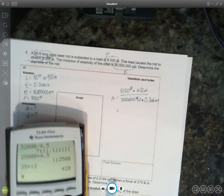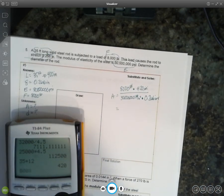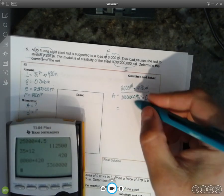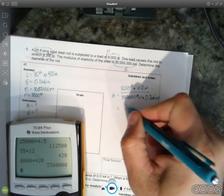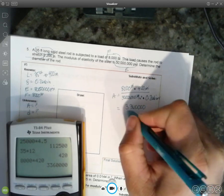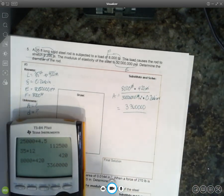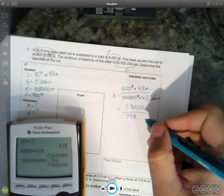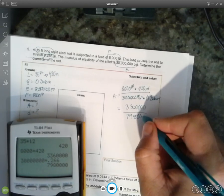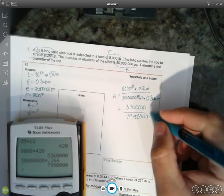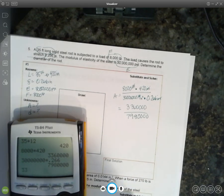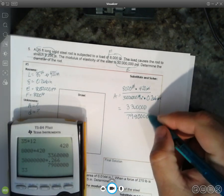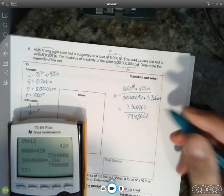And that would be, we'll do the top, 8,000 times 420, 3,360,000 divided by 30 million times 0.266, which is 7,980,000. And we'll divide those. Let's cancel zeros. 1, 2, 3, 4. All right.